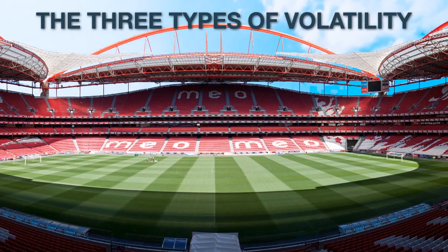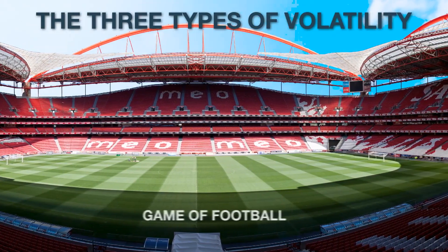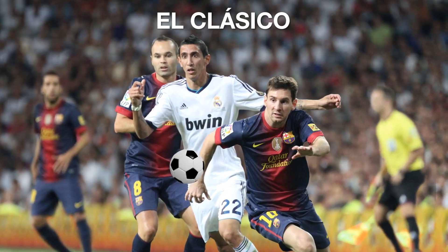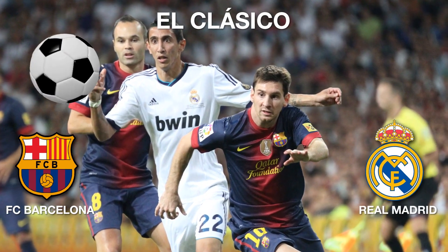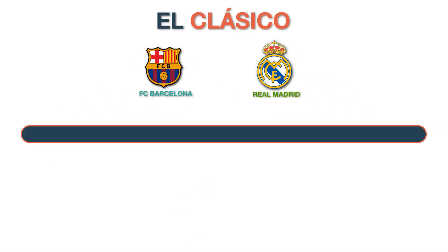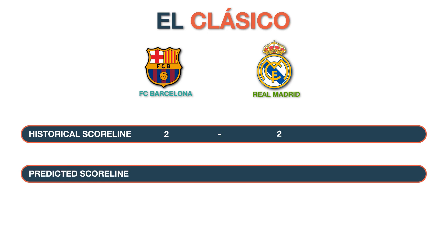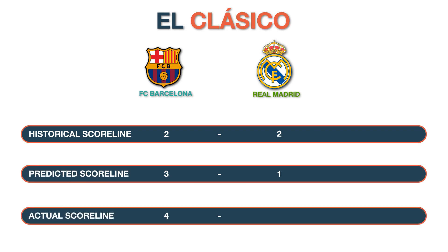Let us understand these three types of volatilities through a game of football. Assume that you and your friends are about to watch El Clásico — the fierce game between FC Barcelona and Real Madrid. Based on the historical goals of the two clubs in previous games, one would say that this game would result in a 2–2 draw. But looking at the current form of players, everyone predicts the game to be won by Barcelona with a scoreline of 3 goals to 1. After the game is over, it is seen that Barcelona wins the game by 4 goals to 2. These three scorelines can be categorized as historical, implied, and realized volatility.